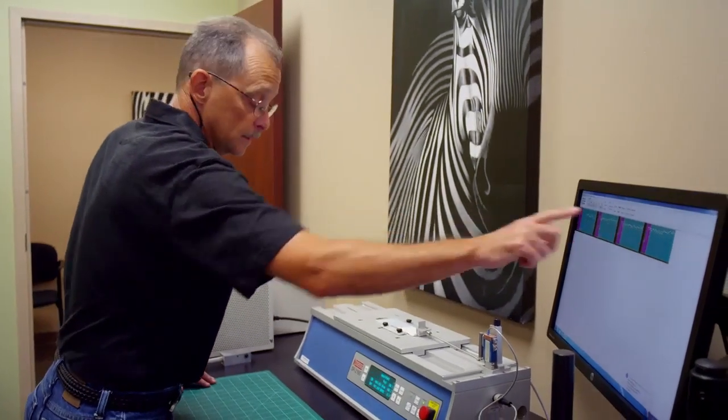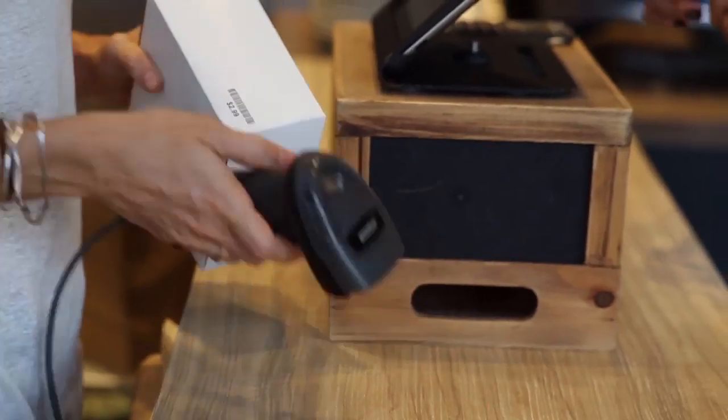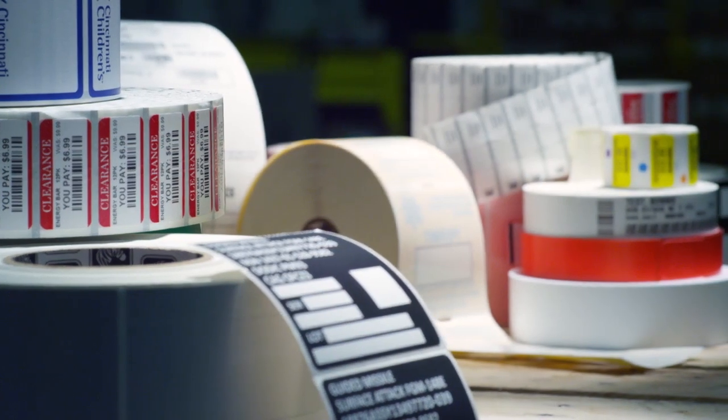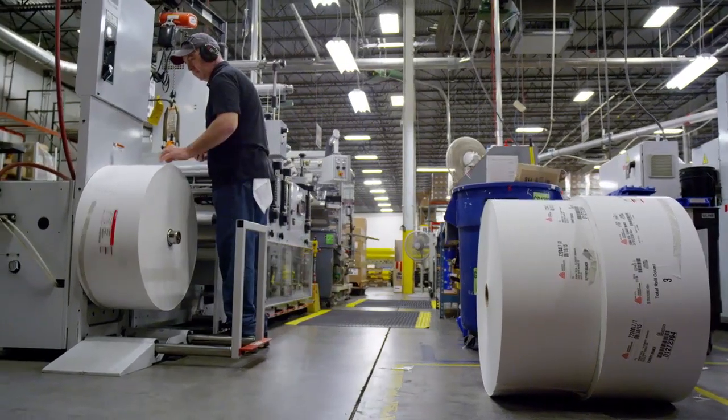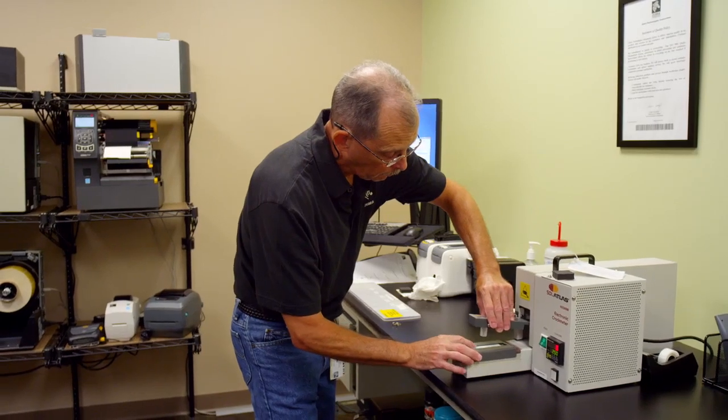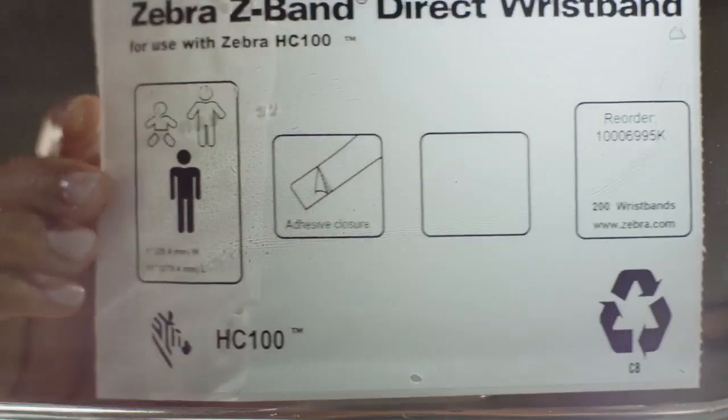At Zebra, we understand that quality isn't only what we put into our products, it's what our customers get out of them. That's why we only use pre-tested, consistent materials in manufacturing processes, ensure minimal print head wear and tear, and implement chemical, adhesive, and environmental testing to withstand unique environments.